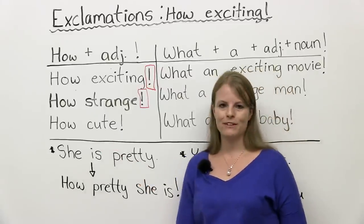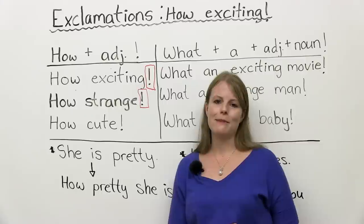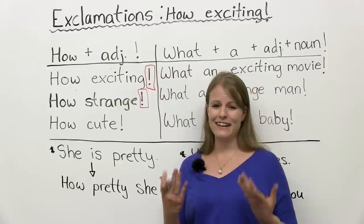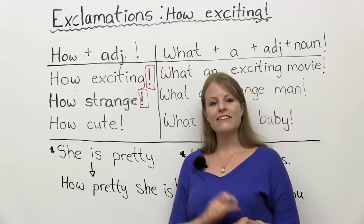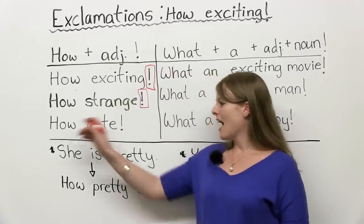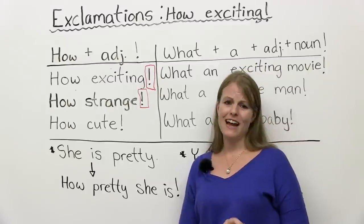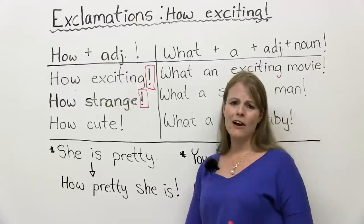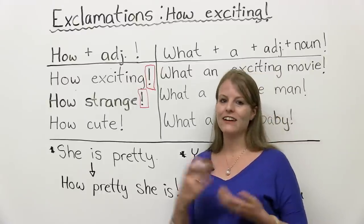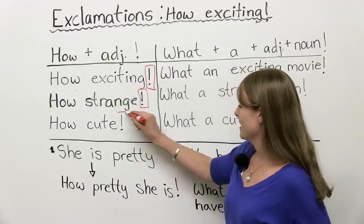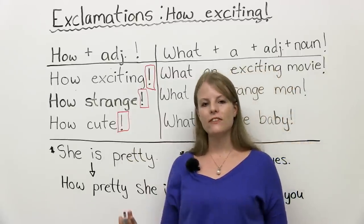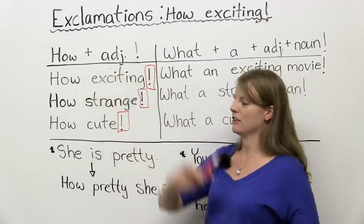Another example. Maybe you see a baby. Your friend just had a baby. You're looking at it. It has these nice big eyes. What do you say? How cute. I always say this when I see puppies and kittens. How cute. So again, no verb. And if you write it, it has an exclamation mark. So these are our how exclamations.